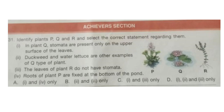Achievers section — each question carries two marks. Question 31. Identify plants P, Q and R and select the correct statement regarding them. Statement 1: in plant Q, stomata are present only on the upper surface of the leaves. Statement 2: duckweed and water lettuce are other examples of Q type of plant. Statement 3: the leaves of plant R do not have stomata. Statement 4: roots of plant P are fixed at the bottom of the pond. The correct answer is option C — statements one and three only.